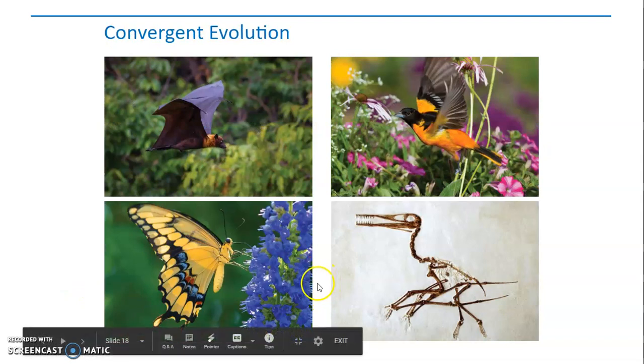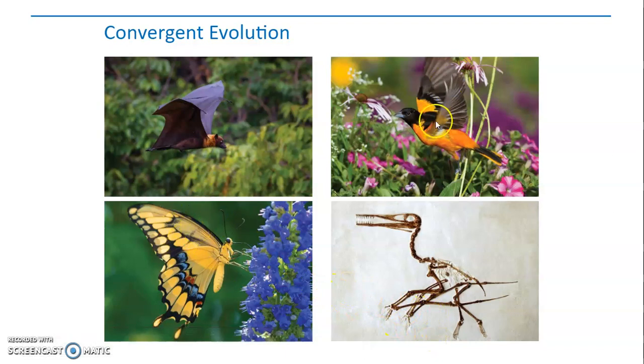Alright, convergent evolution - things evolving to be more similar. So for example, all these things have one thing in common, and that is wings. So you can see that they all evolved wings, but all the wings are different.